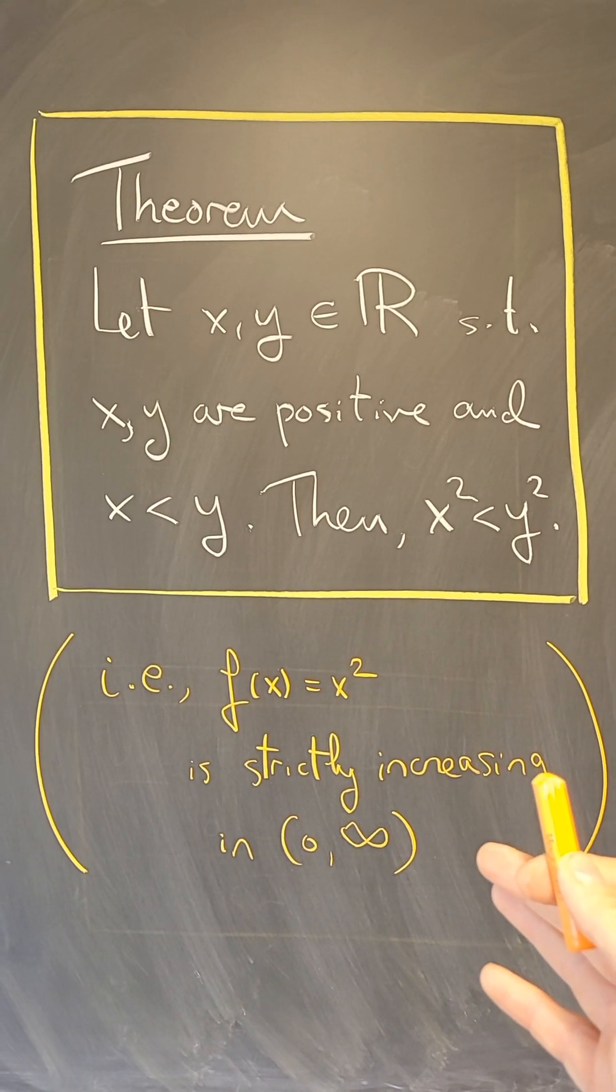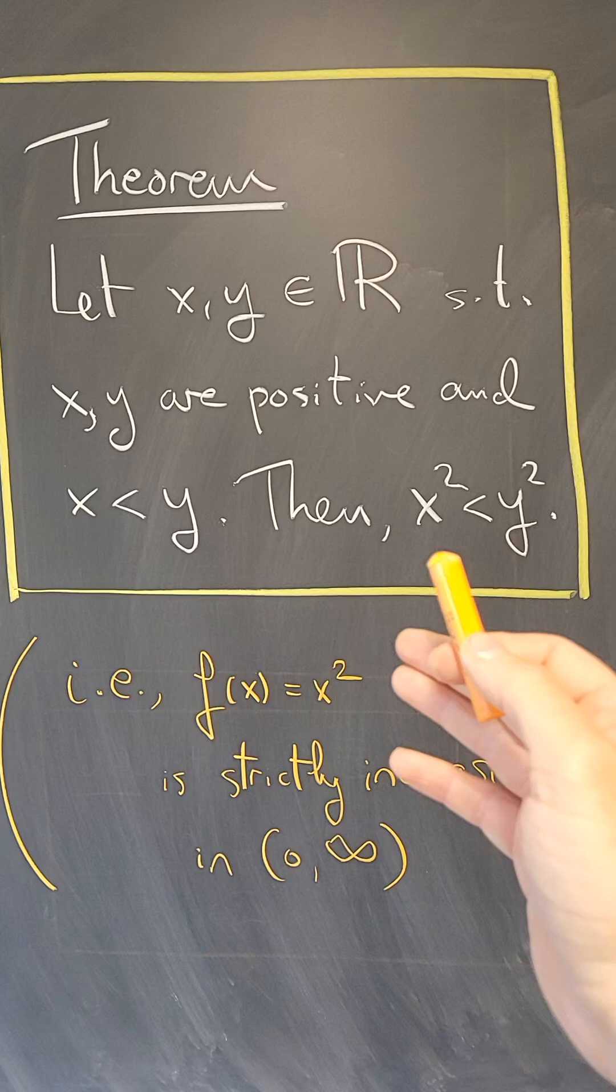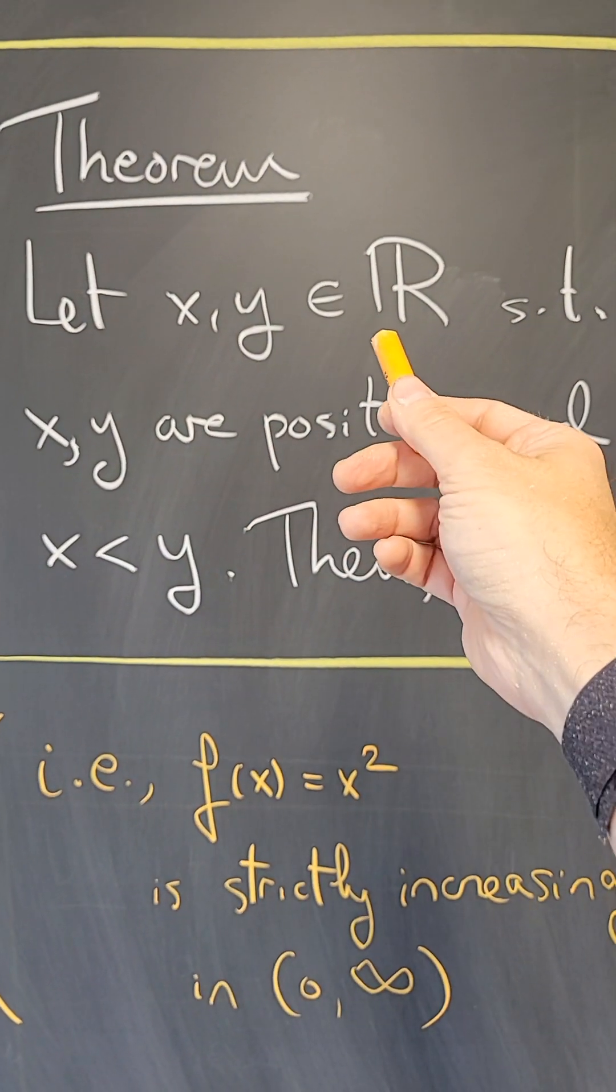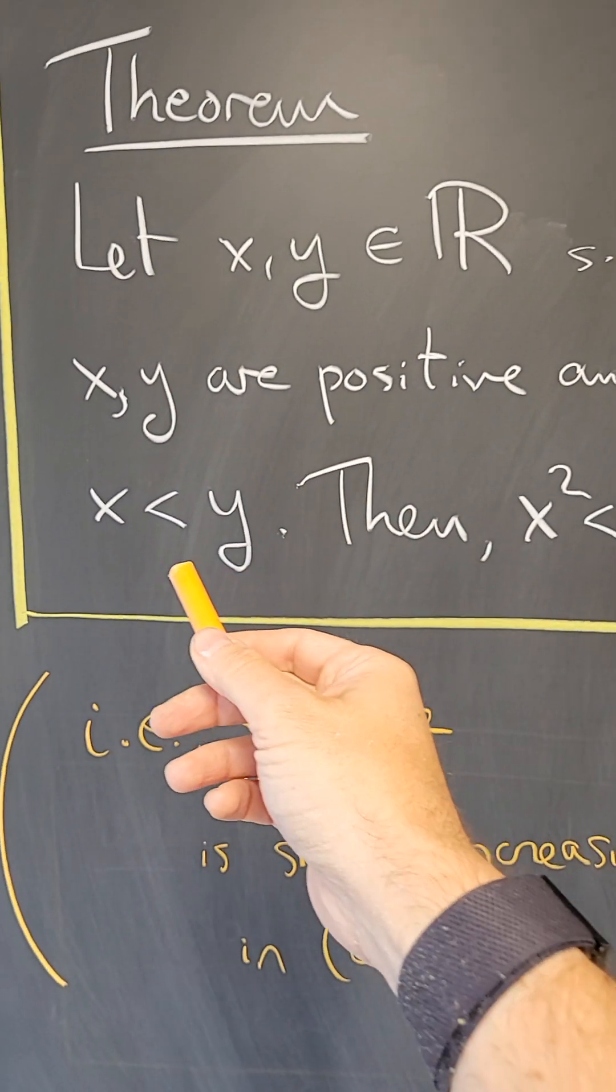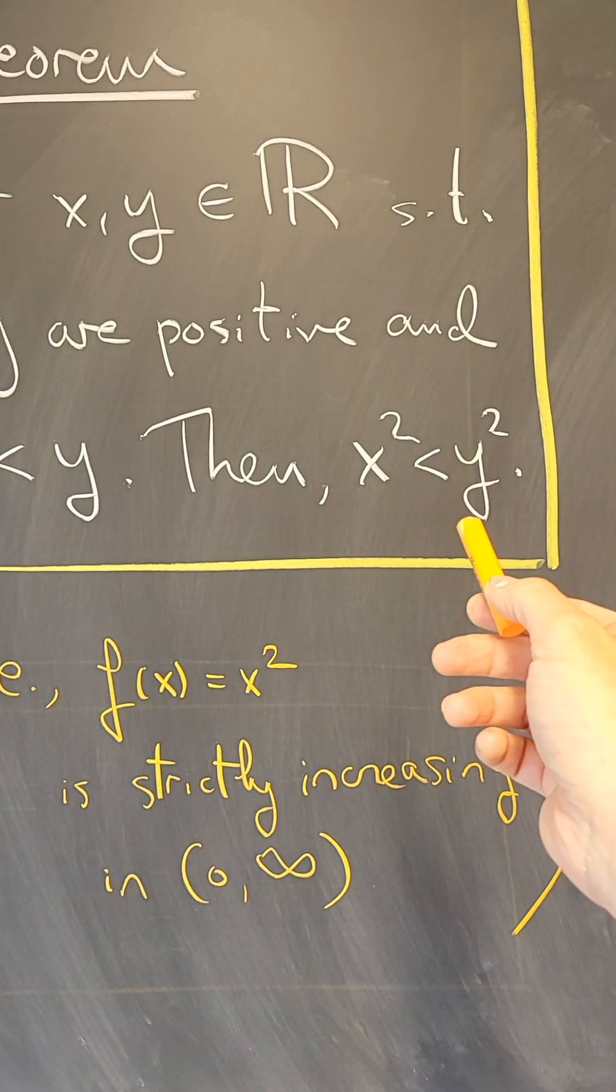Here's an example of how to write a mathematical proof, this time proving a fact about the real numbers. We're going to show that if x and y are real numbers that are positive and x is less than y, then x squared is less than the square of y.